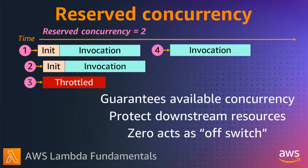You can also set the function concurrency to zero. This, in effect, stops any function invokes and acts as an off switch. This can be useful to stop Lambda processing when you have an issue downstream, and can give you time to fix the issue before dialing Lambda up again.